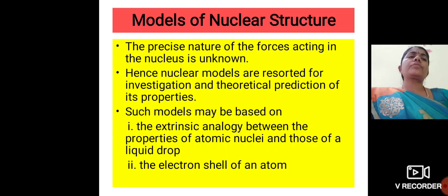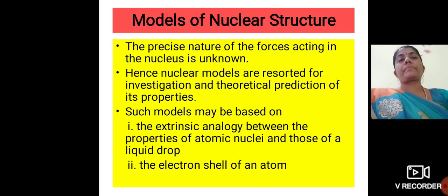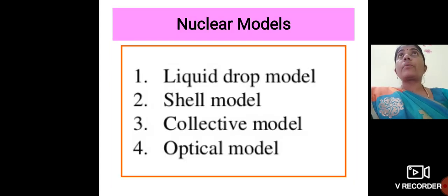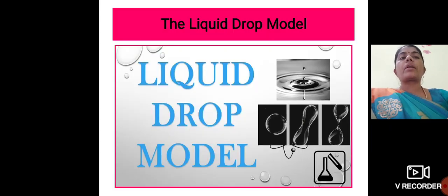Actually the precise nature of the forces acting in the nucleus is unknown. Nuclear models are resorted for investigations and theoretical predictions of its properties. Such models may be based upon the extrinsic analogy between the properties of atomic nuclei and those of a liquid drop and also the electron shell of an atom. There are some more kinds of nuclear models among which we can see about only four models: liquid drop model, shell model, collective model and optical model. Especially we are going to see about liquid drop model today.